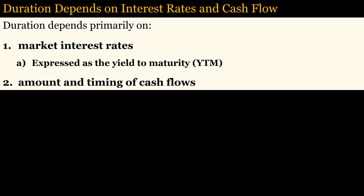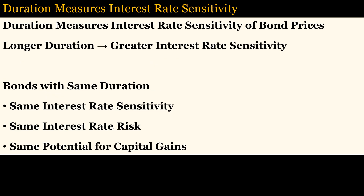Duration depends primarily on market interest rates and the amount and timing of cash flows. It has always been observed that the interest rate sensitivity of bonds increases with the term of the bond, but different bonds with different cash flows had different sensitivities to interest rates, even if they had the same terms to maturity. There are only two facts about duration you need to know for this video: first, interest rate sensitivity increases with the duration; second, bonds or funds with the same duration will have the same interest rate sensitivity.